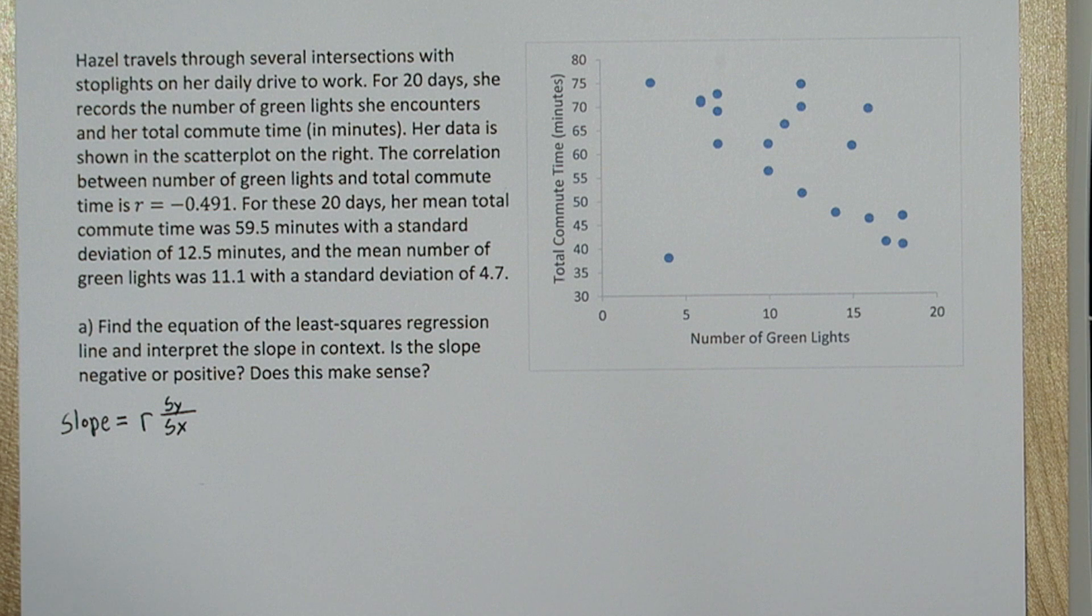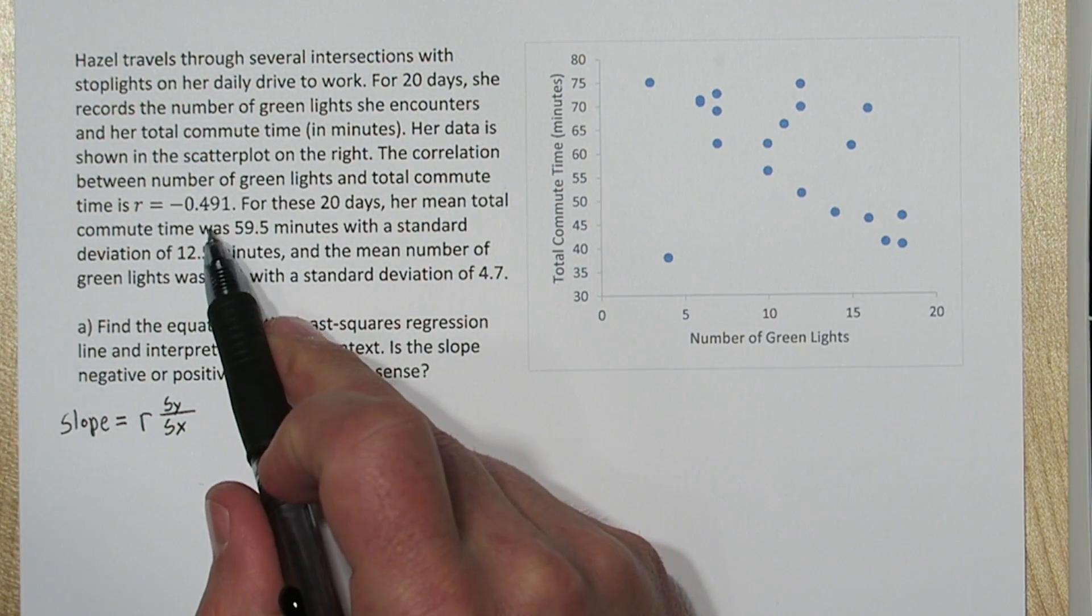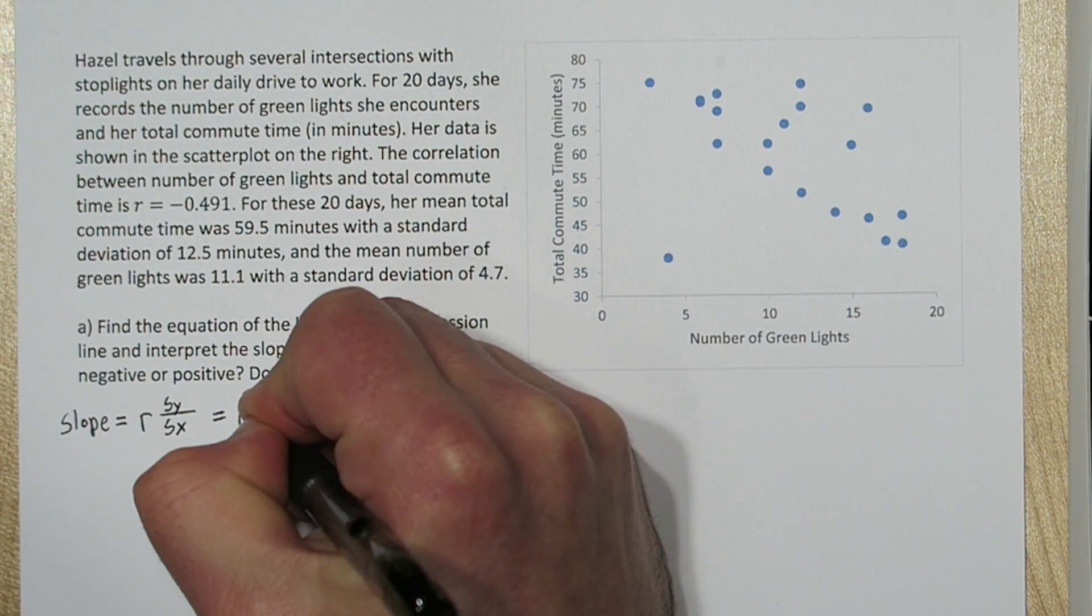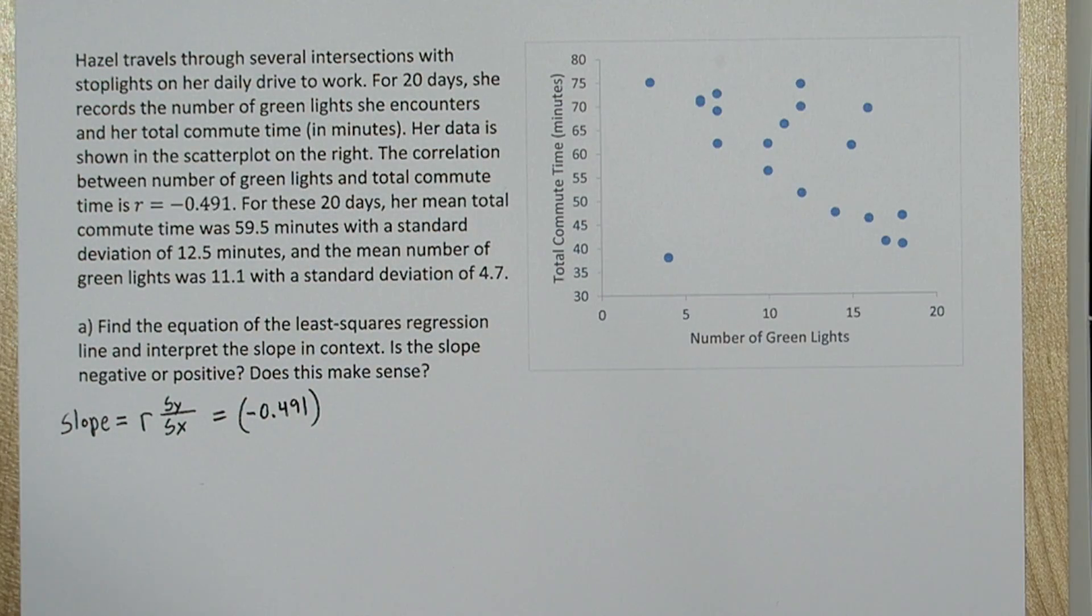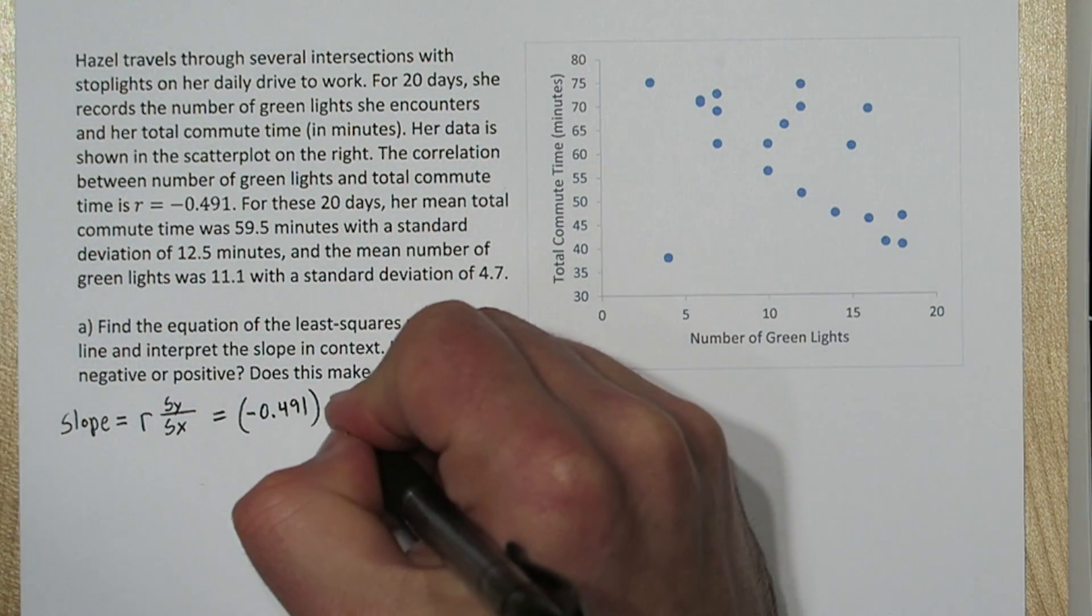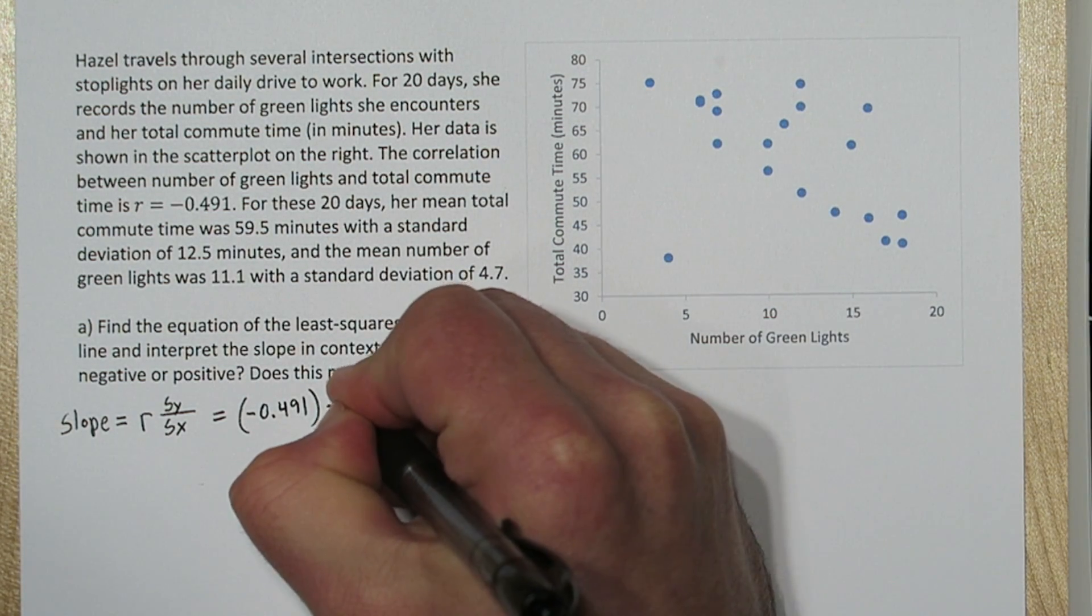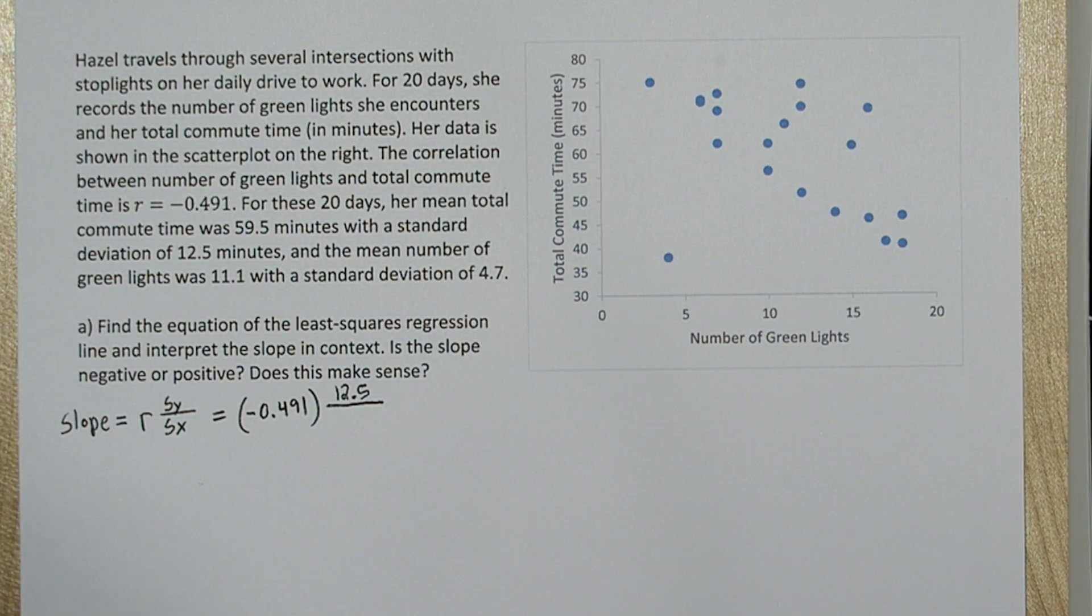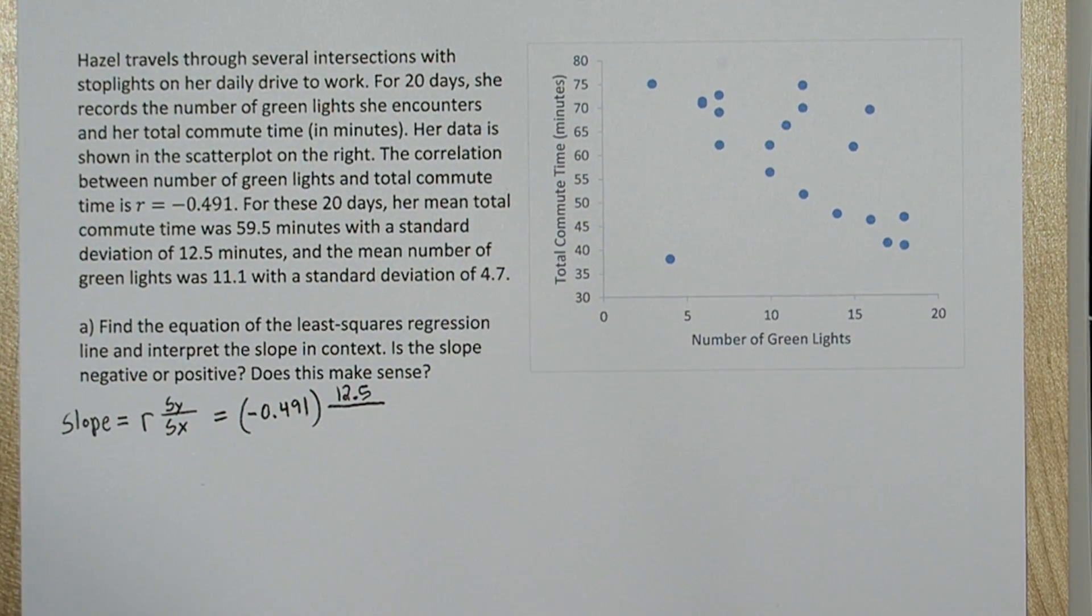The first is that the slope equals correlation times standard deviation of our response variable divided by standard deviation of our explanatory variable. And we're given all that up here. Right here, correlation is negative 0.491, and our response variable is commute time, and it says the standard deviation of the commute times is 12.5 minutes. And the standard deviation of our explanatory variable, number of green lights, is 4.7.